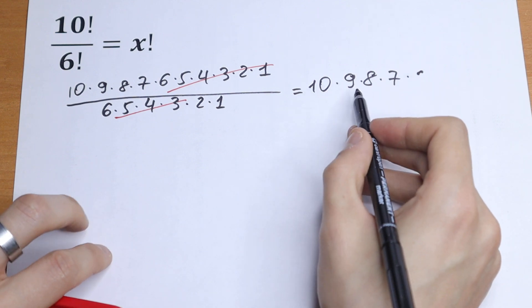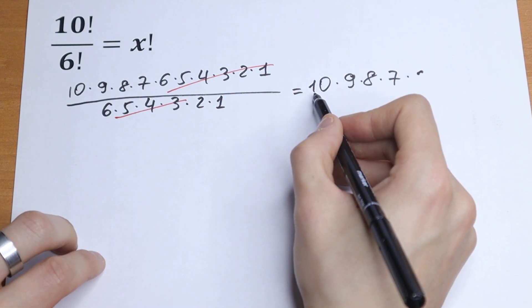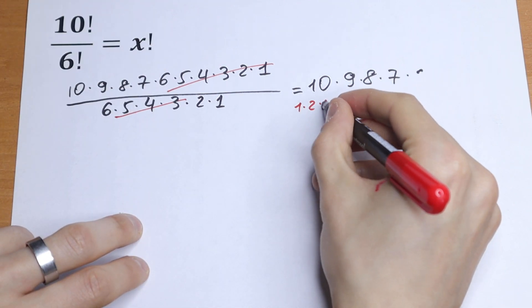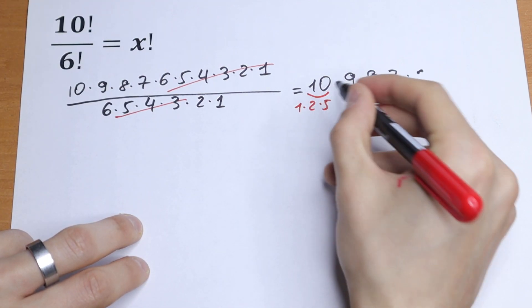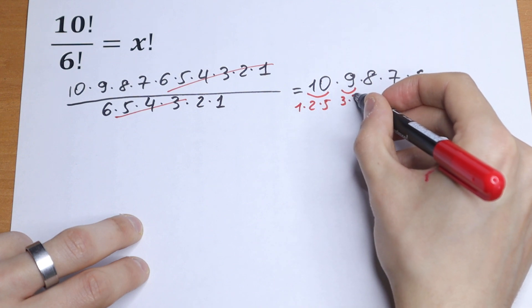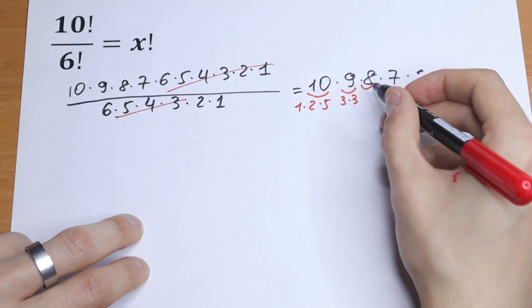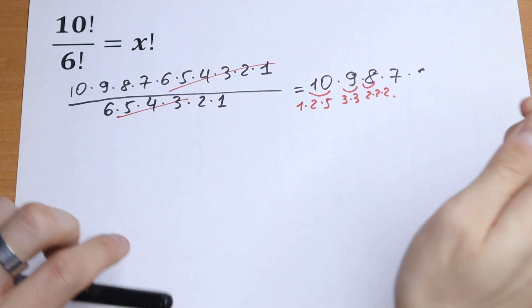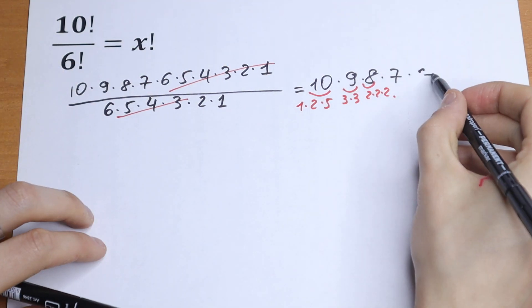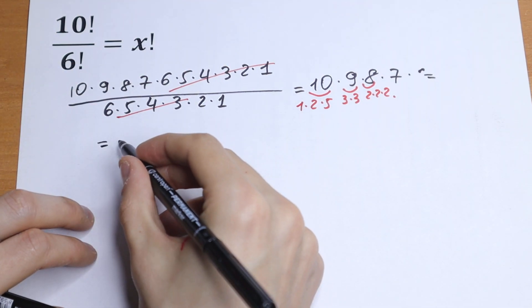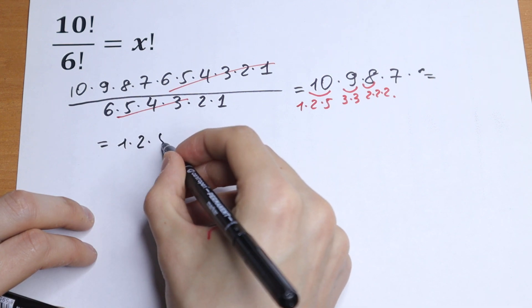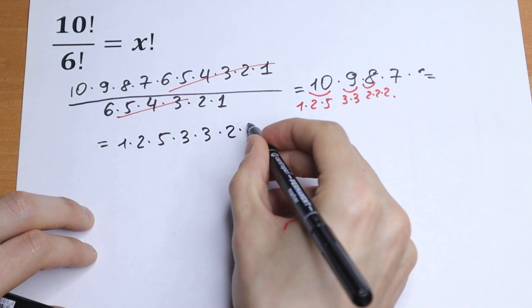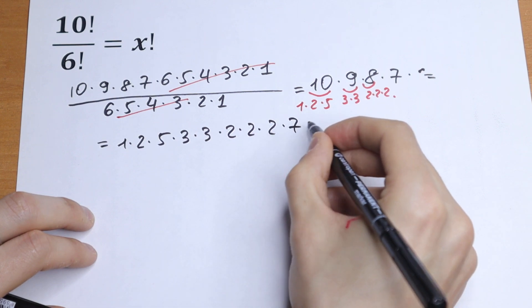Of course we can simplify this a little bit. Let's write 10 as 1 times 2 times 5, this 9 as 3 times 3, and this 8 as 2 times 2 times 2. Then it will equal 1 times 2 times 5 times 3 times 3 times 2 times 2 times 2 times 7.